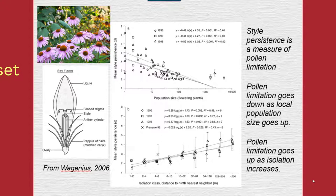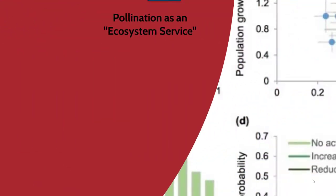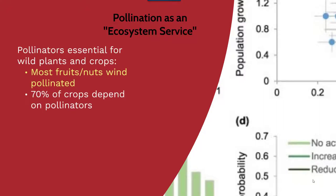There really is a huge impact on pollen limitation within these plants, given that the organism needs to have a larger style in order to be successful at reproducing and capturing pollen. Pollination in general should be considered an ecosystem service within our communities. Pollinators are essential for wild plants and crops alike; most fruits and nuts are wind pollinated, and about 70 percent of crops depend on pollinators in general.